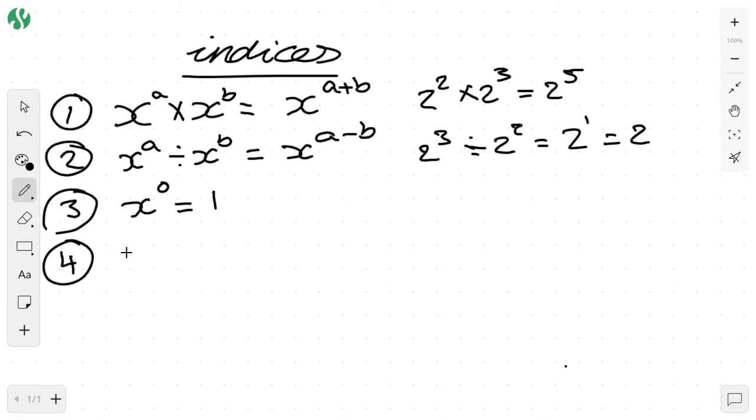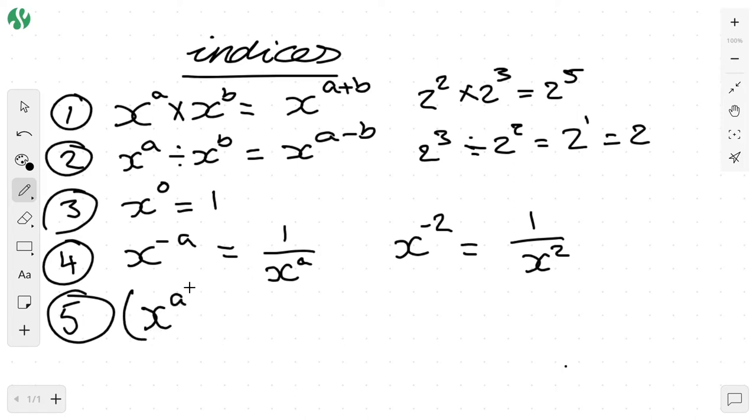Point number four: x to the negative a equals 1 divided by x to the power of a. So x to the negative 2 is 1 over x squared. Rule number five: x to the a to the power of b is equal to x to the power of a times b. It's important not to get rule number five confused with rule number one.